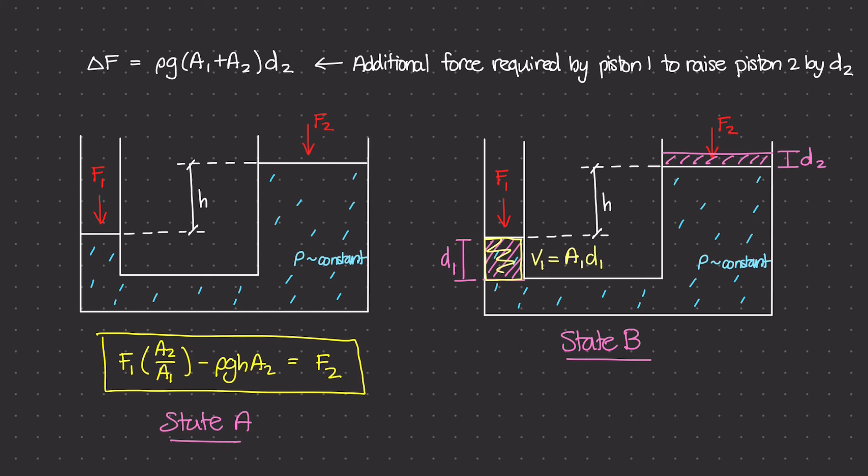Now volume 2, which is this volume right here, I'll just call V2, and that's going to be equal to A2 times D2, right? Area times distance.